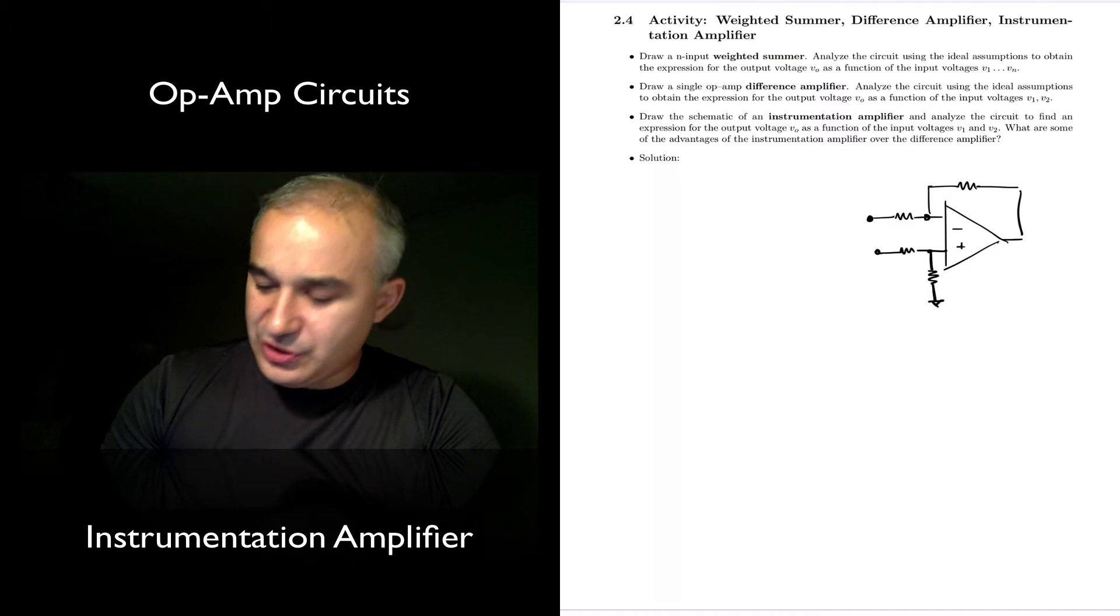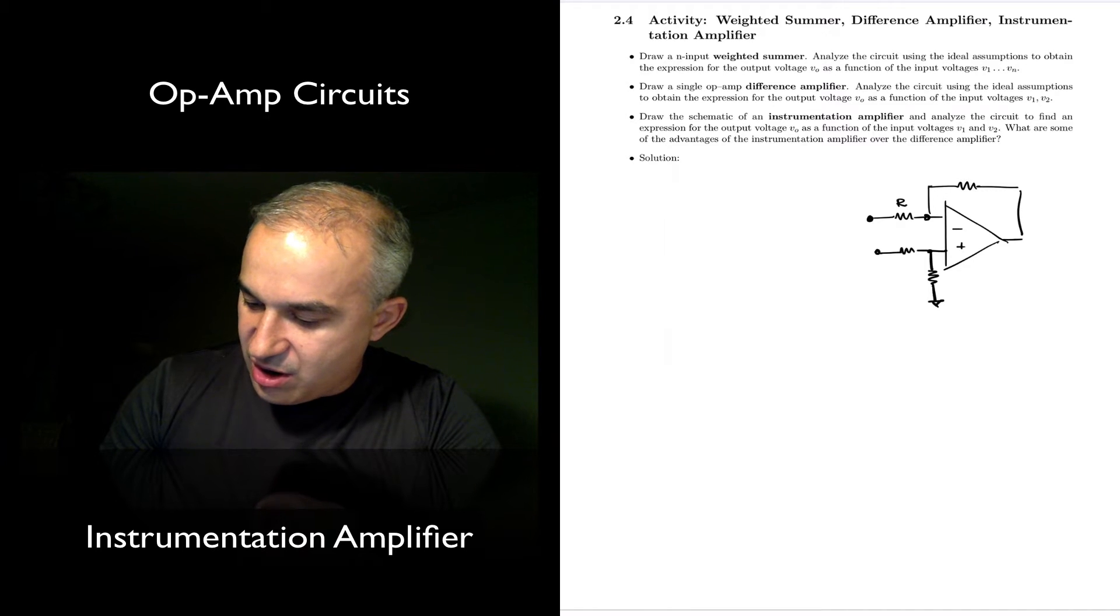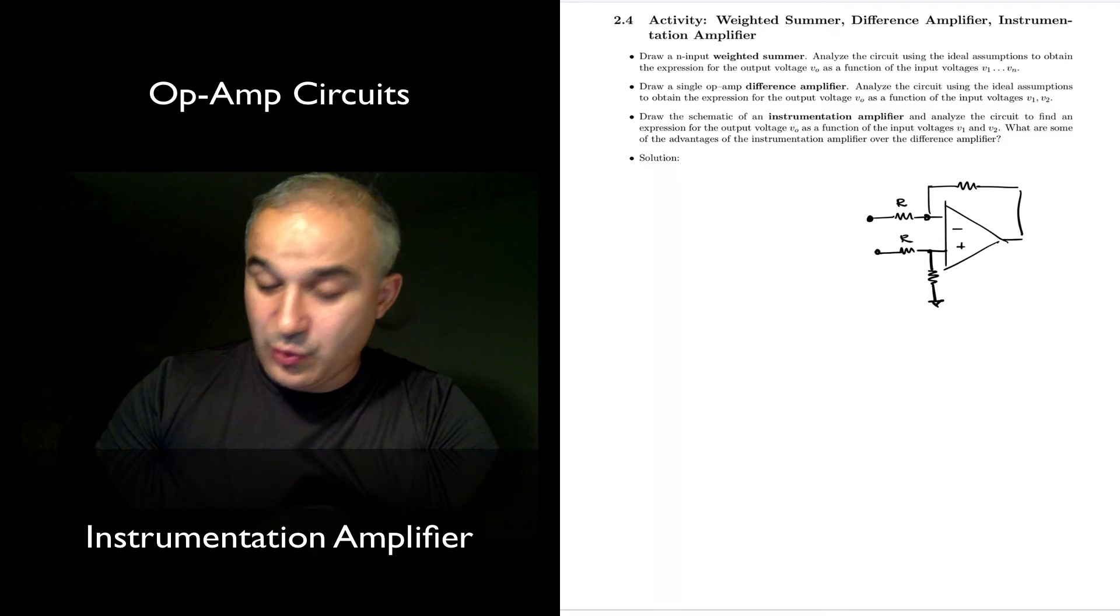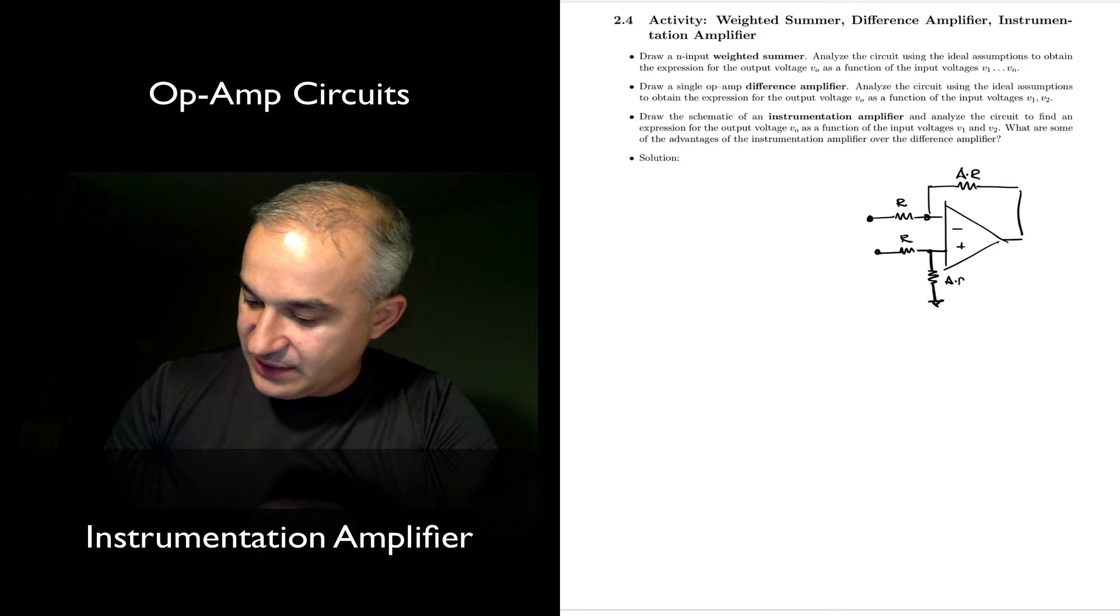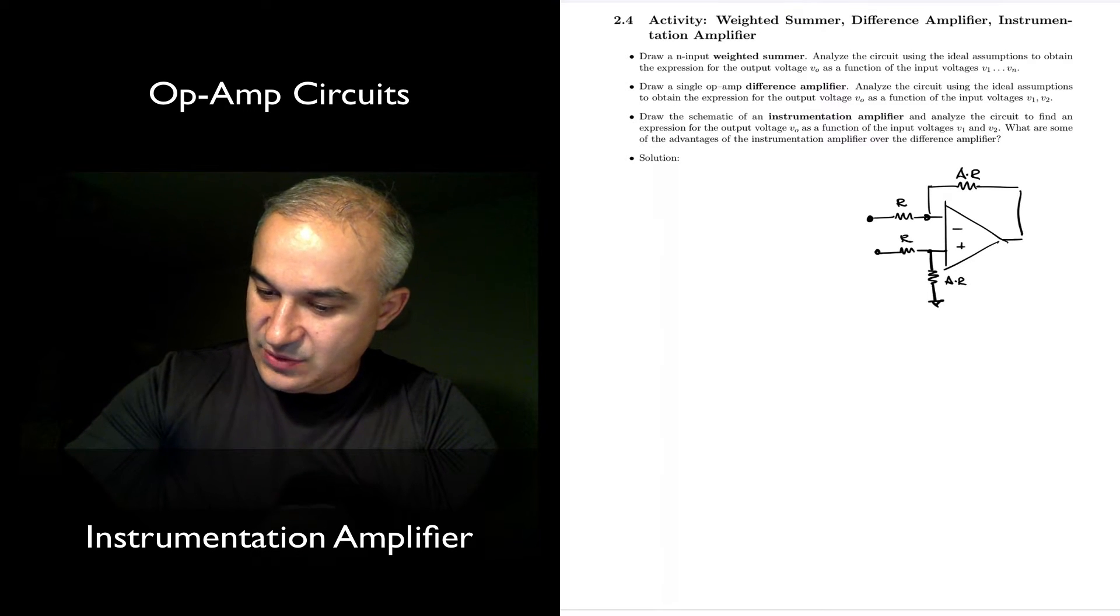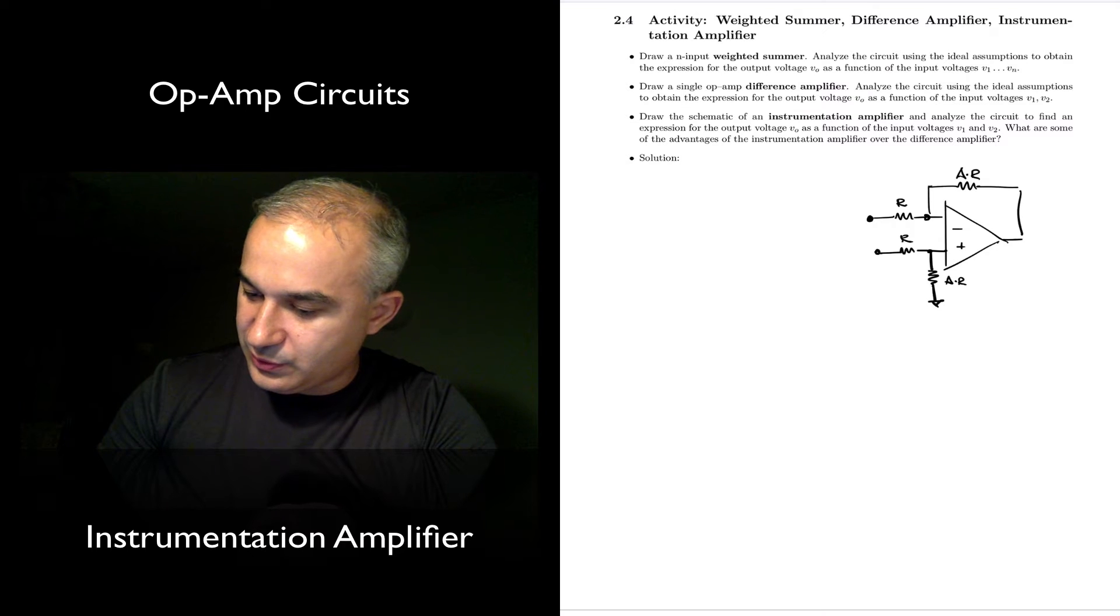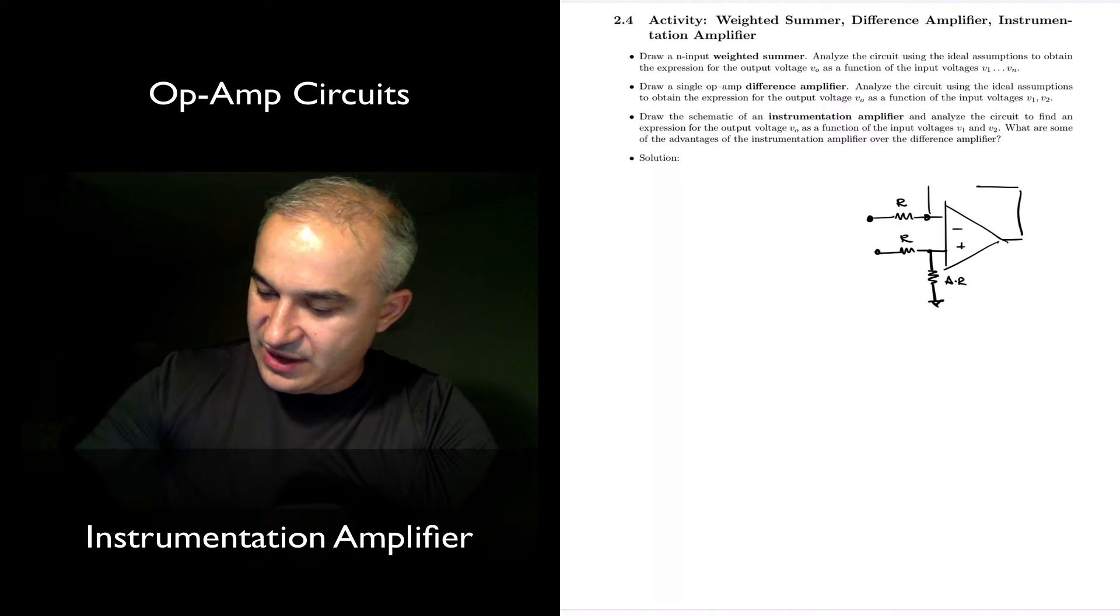And we are going to do this with unit gain. Remember, this was R, R, and then we could amplify like A*R and A times R. In this case, we are just going to have unit gain.